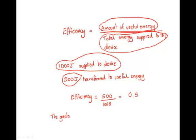Now the greater the efficiency, the less waste there is. In the above case, you've got 0.5. That means half of the energy is being transformed into useful energy and half of it is being wasted.